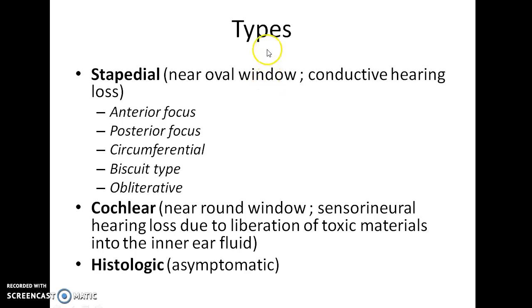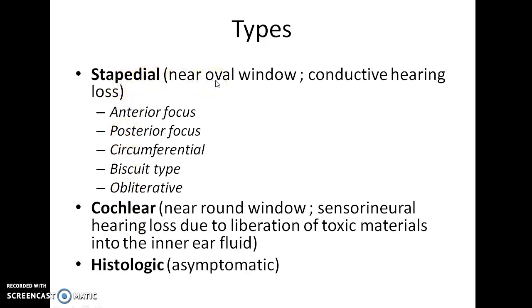What are the types of Otosclerosis? There are three basic types: Stapedial Otosclerosis, Cochlear Otosclerosis, and Histologic Otosclerosis. In Stapedial Otosclerosis, spongy bone is deposited near the oval window. This leads to conductive hearing loss due to the fixation of the stapes.